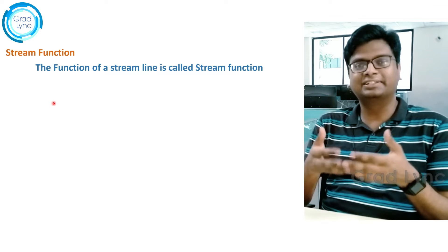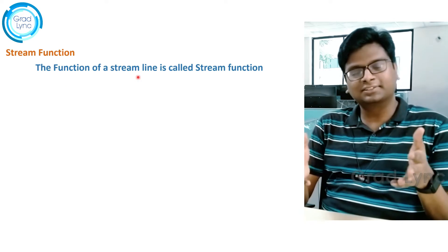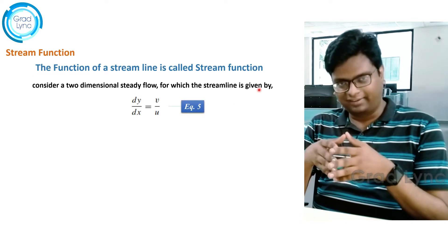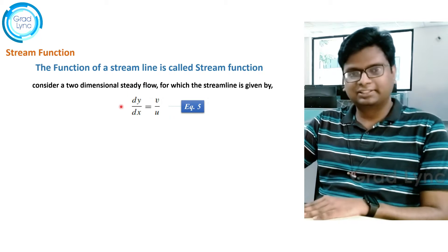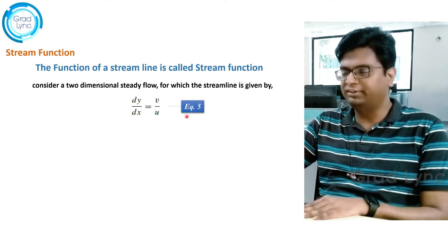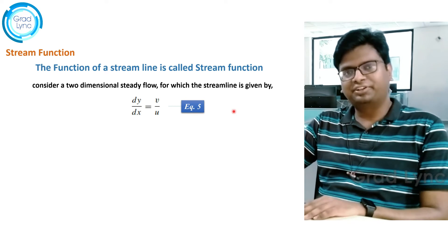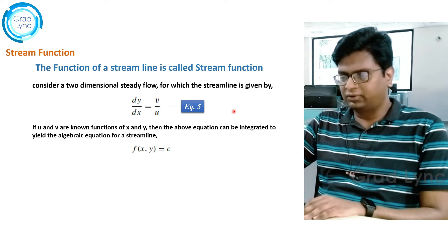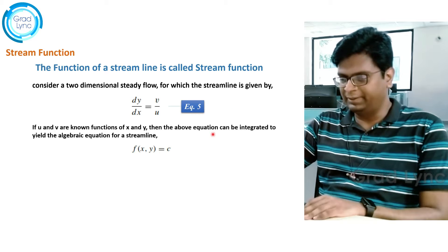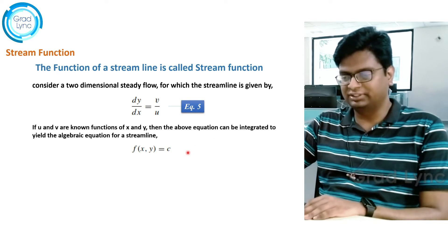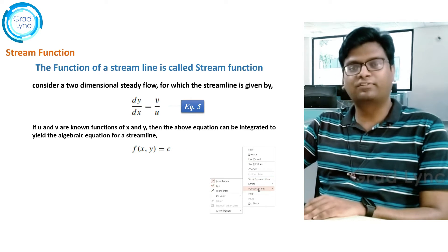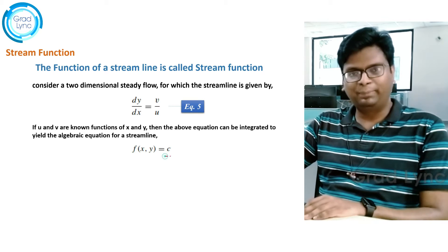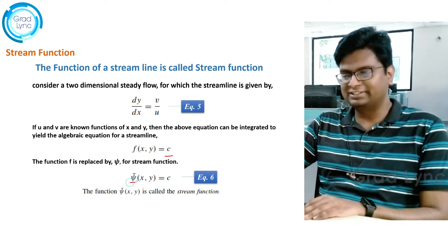All of us know what a streamline is. A function which defines that streamline is called the stream function. Let's consider a 2D steady flow for which the equation for a streamline is given by dy/dx = v/u — let's call this equation number 5. If I know the values of u and v, I can write the above expression in terms of a function f(x, y) = constant. If I replace this f with psi, that is called the stream function.